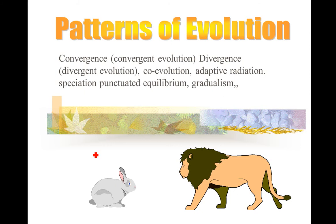We're going to cover convergence, also called convergent evolution; divergence, or divergent evolution; co-evolution; and adaptive radiation. I'm probably going to do a second video based on this one.